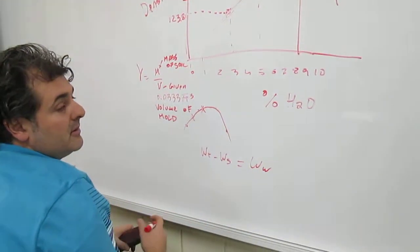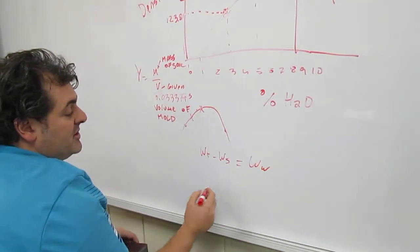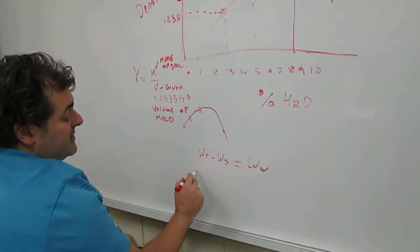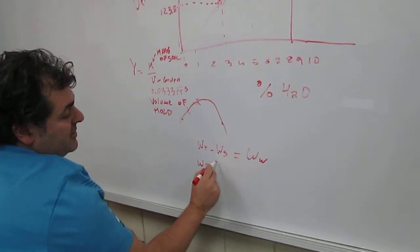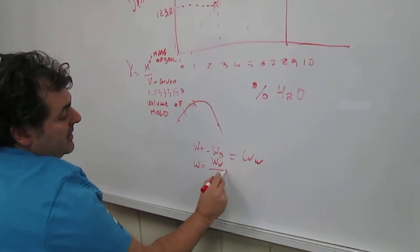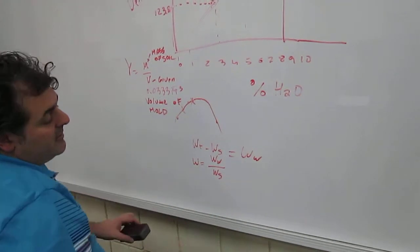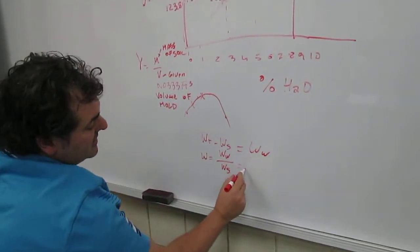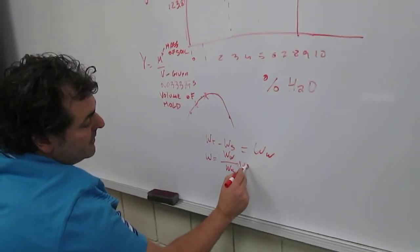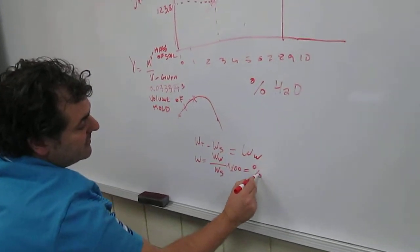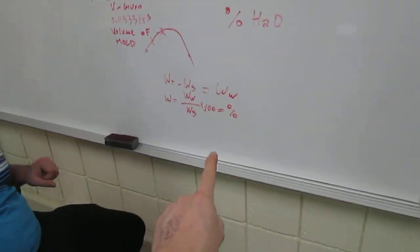And for the moisture percent, which is equal to the weight of water divided by the weight of soil, and then you multiply this by 100 to get percentages. Do you need a graph for this?